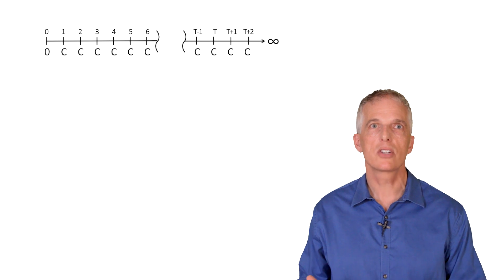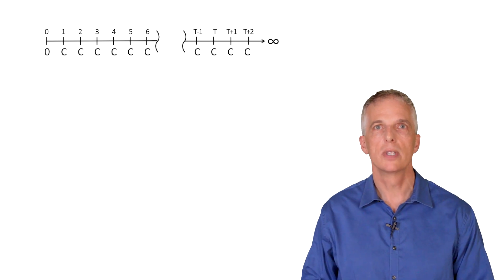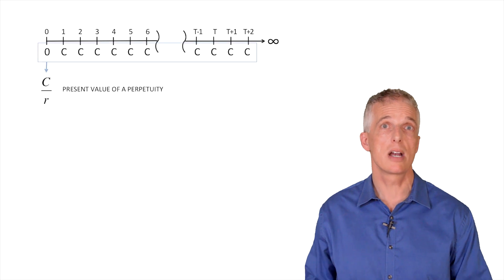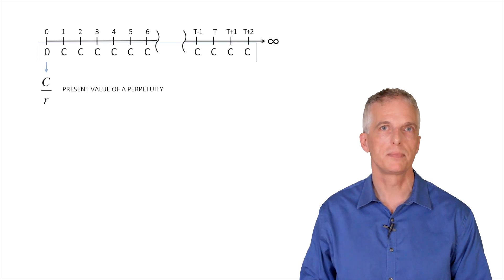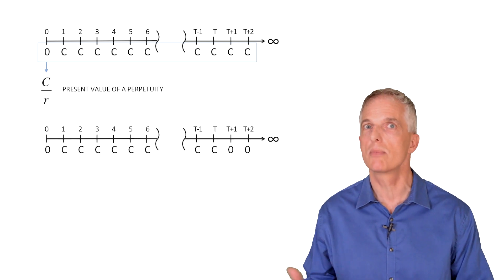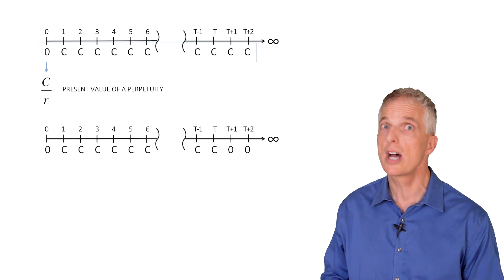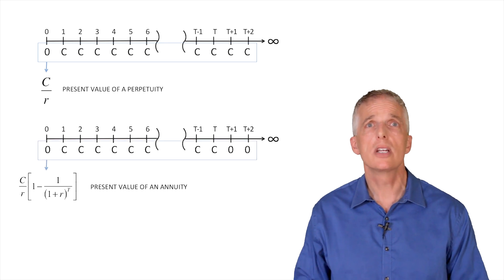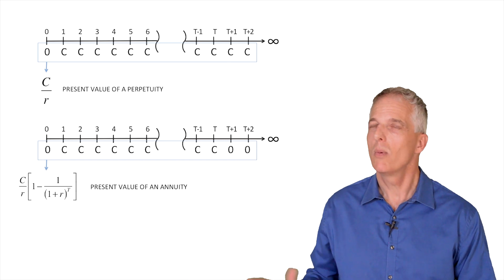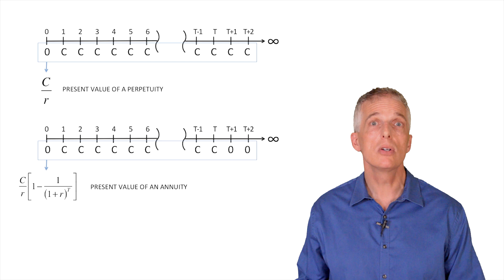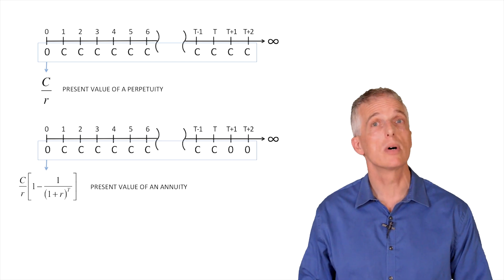Let's start with the perpetuity we just discussed, which has a constant cash flow C forever. We now know the present value of this cash flow is C divided by R, the prevailing interest rate. Recall that an annuity is a fixed number of cash flow payments over a fixed number of years, as depicted on the timeline on the bottom. The present value of an annuity is provided by the formula behind me. We can derive the valuation of an annuity using the formula to value a perpetuity.